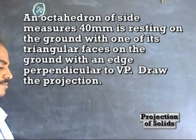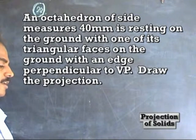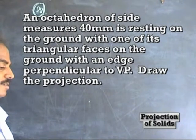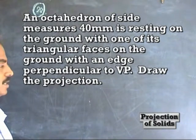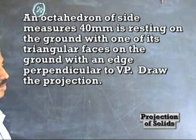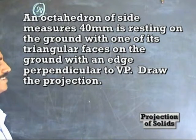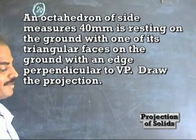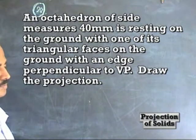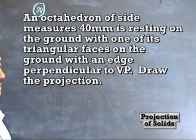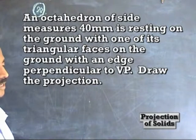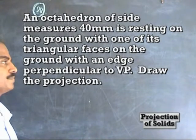The 20th problem: an octahedron of side 40 m is resting on the ground with one of its triangular faces on the ground, with an edge perpendicular to VP.